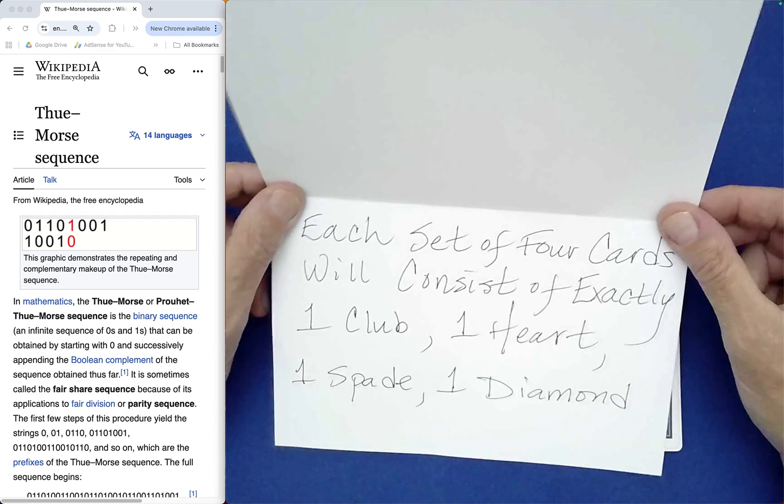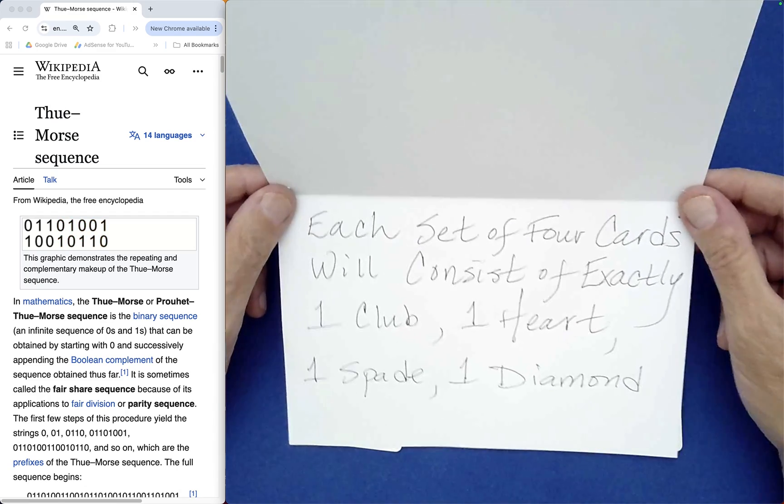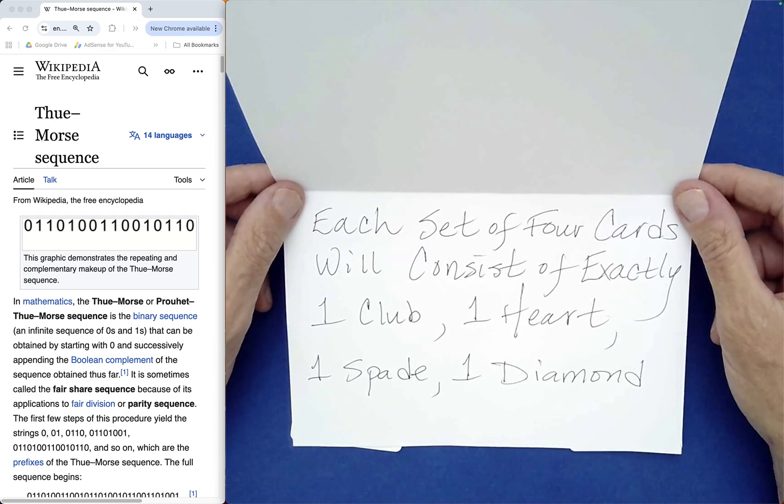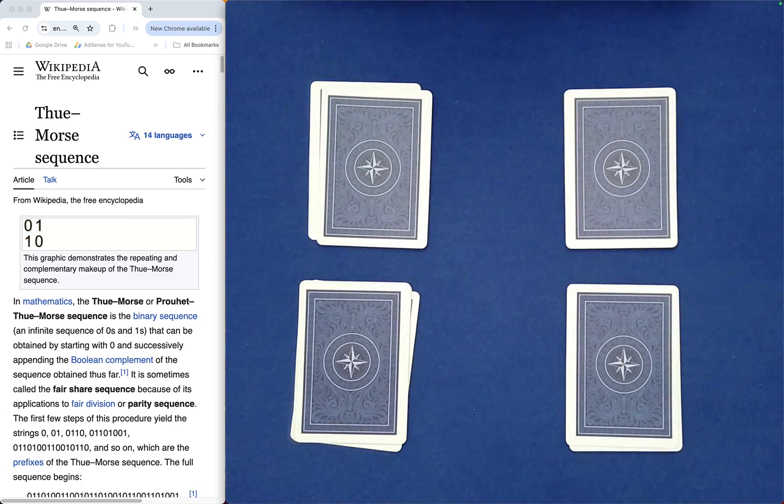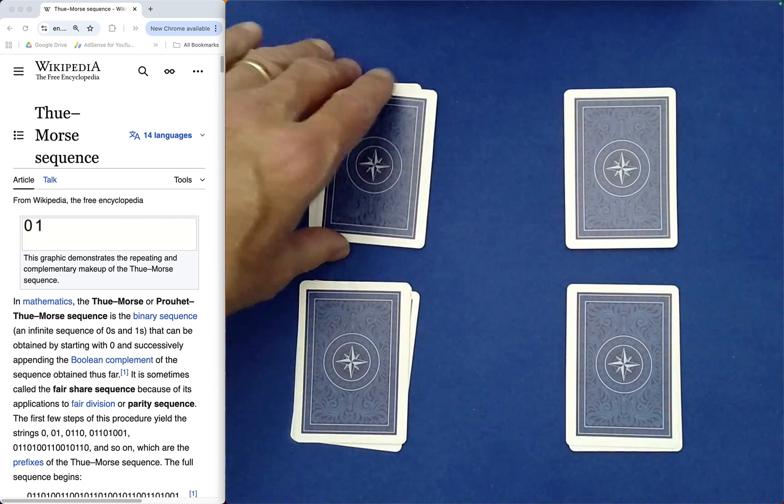Now we don't know if it's true or not, but each set of 4 cards will consist of exactly one club, heart, spade, and diamond. I don't know what you think the chances of that are, but considering all of the mixing that was controlled by you, I think the chances would have to be very, very small. So let's just take a look.